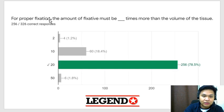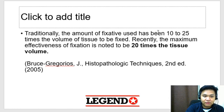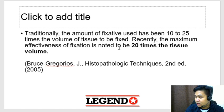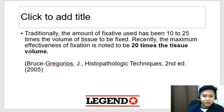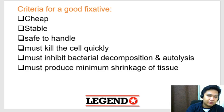For proper fixation, the amount of fixative must be blank times more than the volume of the tissue. This is a must-know — kailangan kabisado natin ito. The answer here would be 20 times the volume of the tissue. Traditionally, ang sinasabi would be 10 to 25 times the volume; however, recently according to Bruce Gregorius, to attain maximum effectiveness of fixation, 20 times the tissue volume yung fixative. Ganun ang histopath — maraming dapat memorize, so you really have to study your notes repetitively. These are the criteria for a good fixative — I hope you have studied this before.